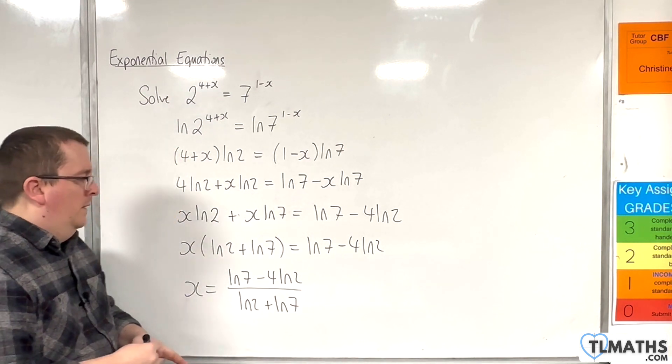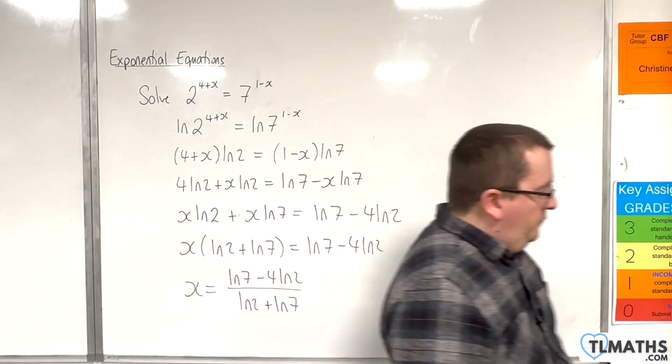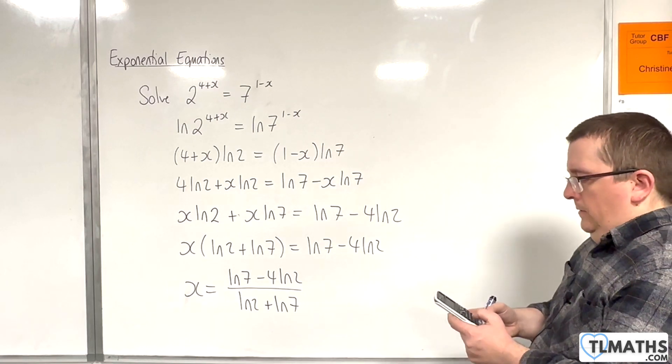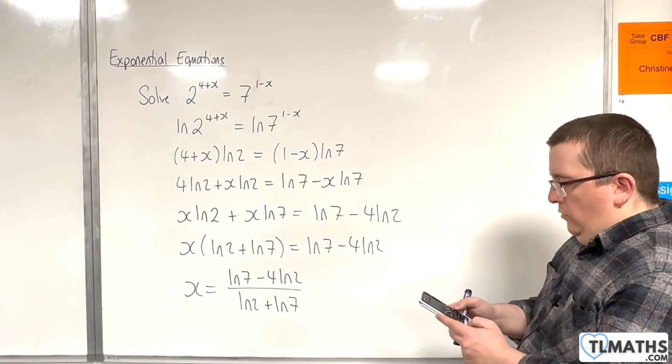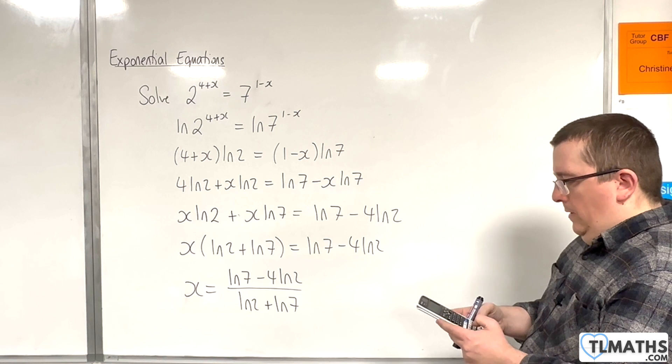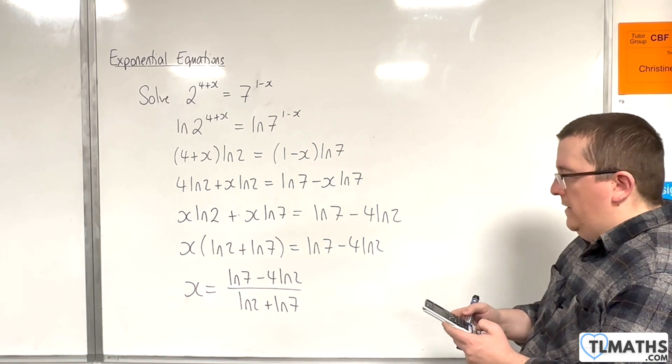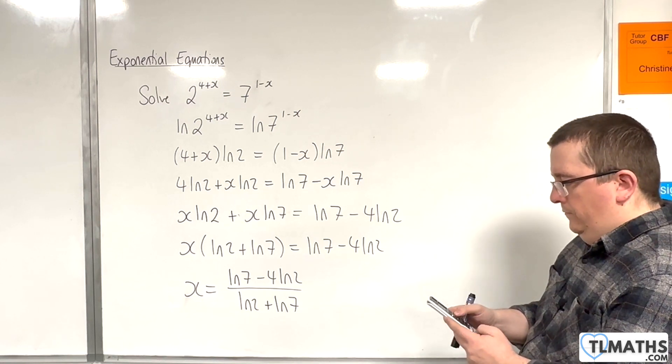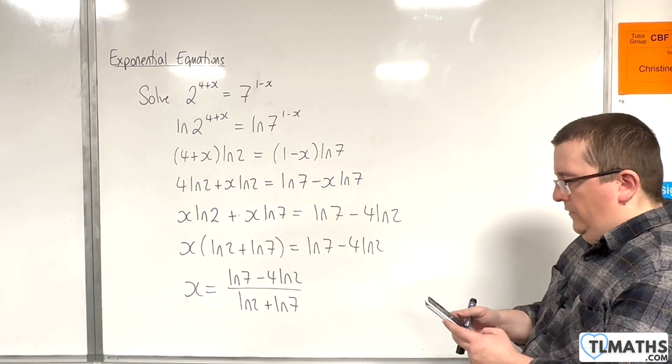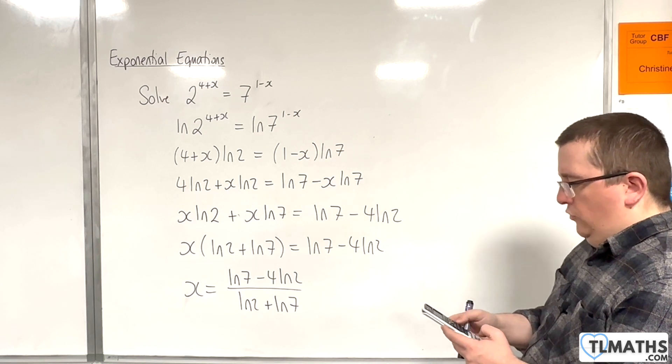Okay, so let's double-check. So natural log of 7 take away 4 lots of the natural log of 2, over the natural log of 2 plus the natural log of 7.